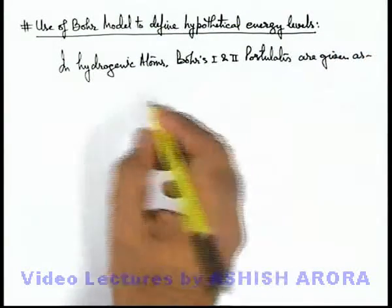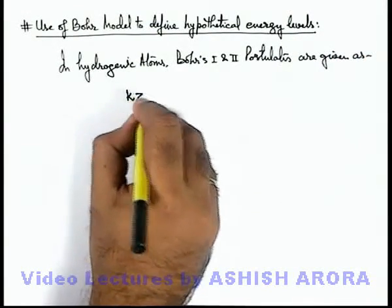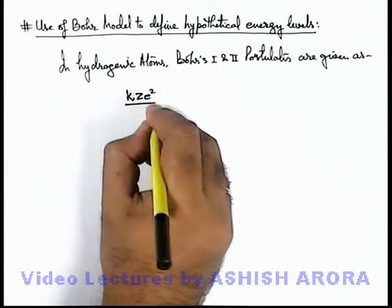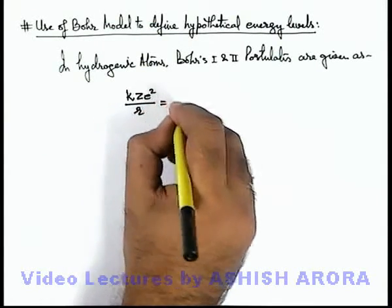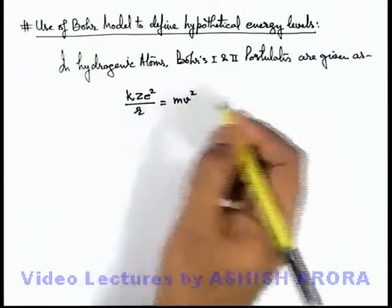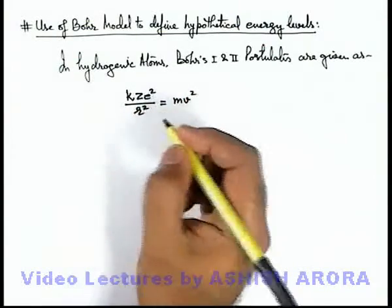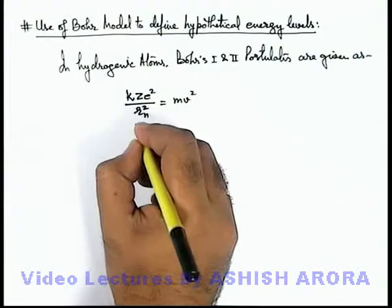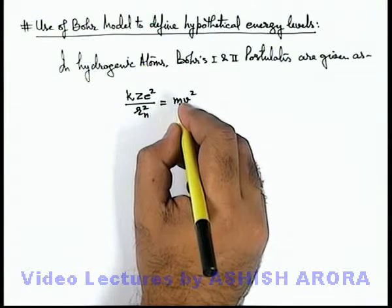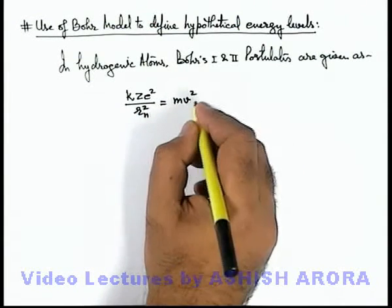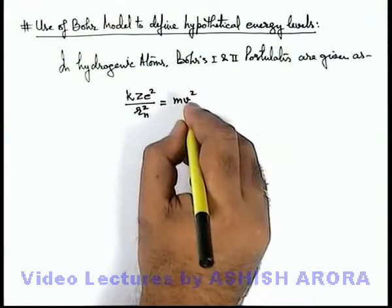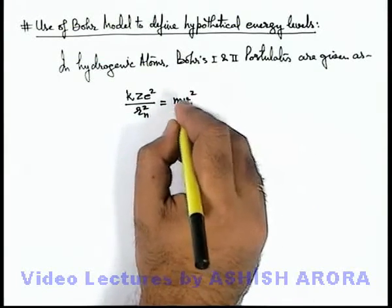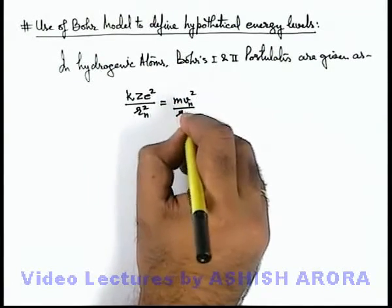We know that the first postulate is given in form of an equation: kZe²/rₙ = mvₙ², or we can say the Coulombic force kZe²/rₙ² provides the centripetal force for circular motion, or it is balancing the centrifugal force acting on the electron, which is mvₙ²/rₙ.